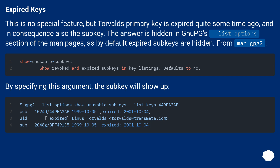From `man gpg2`: by specifying the relevant list-options argument to show expired subkeys, the subkey will show up.